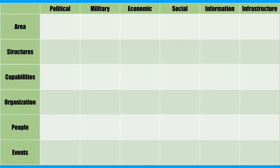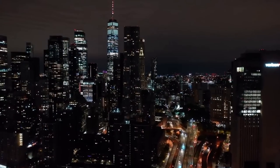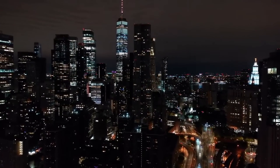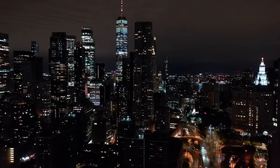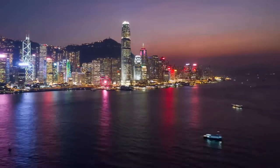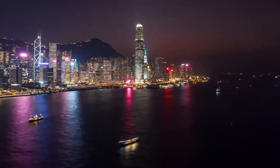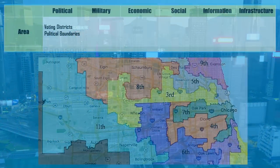From here, we can begin filling out the first blocks with some more specific information. For example, in this first block, we need to consider areas that are related to politics — things like political boundaries and party affiliation areas. This whole process is really just a way to help us organize our thoughts so that we don't forget something. Most analytical tricks are pretty much just simple ways to organize stuff so that you don't forget something. ASCOPE and PAMISI is no different.